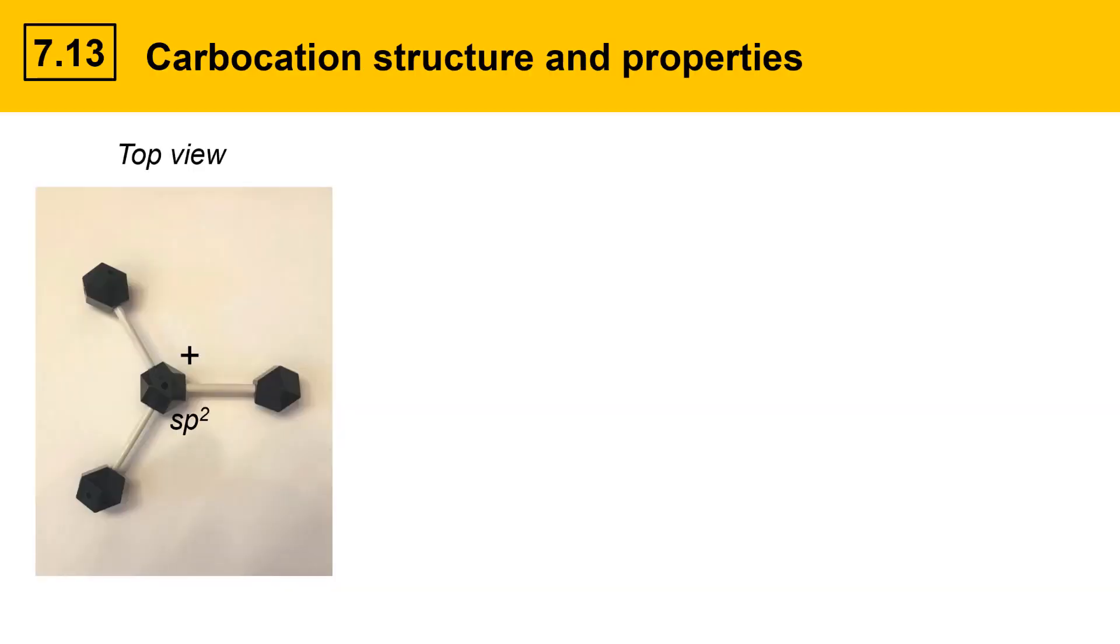Here's a view of a typical generic carbocation. In the middle is the central carbon that bears the positive charge. It's sp2 hybridized and in this particular example there are three carbon groups that are attached. When drawn in a traditional structure type drawing it would look like this.